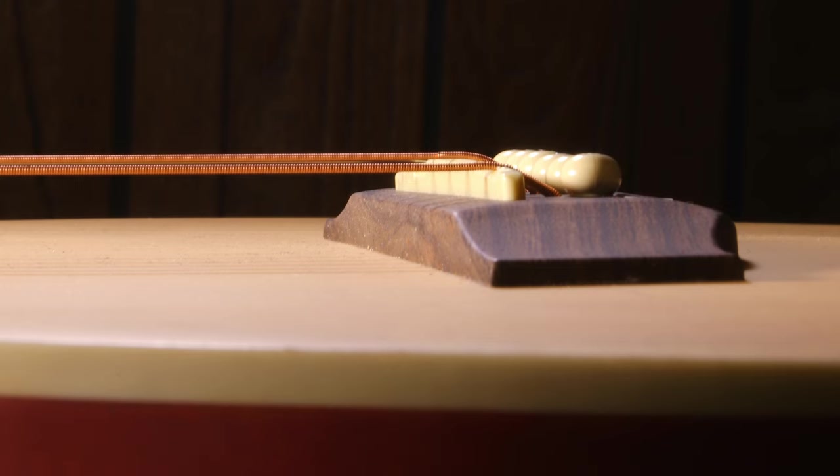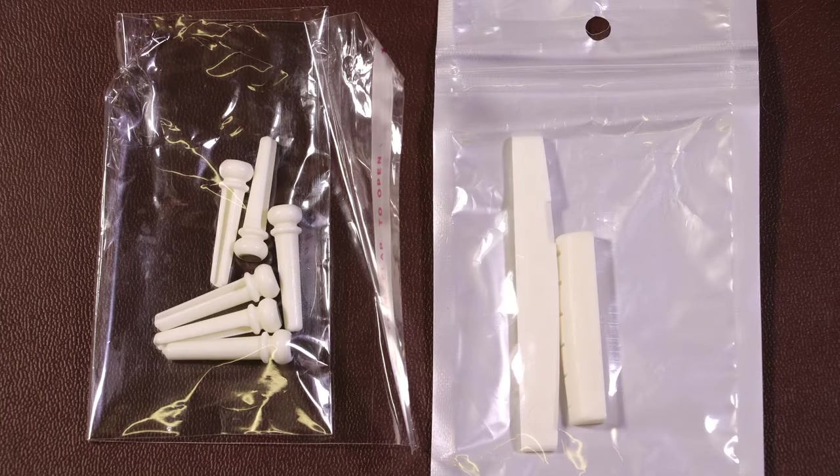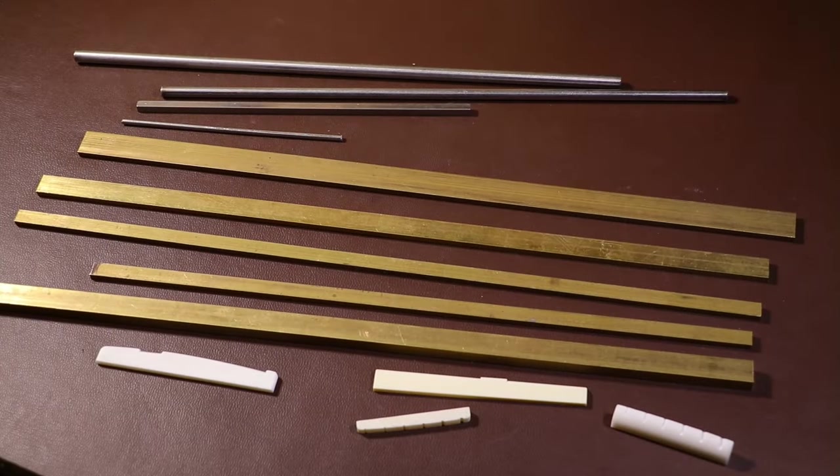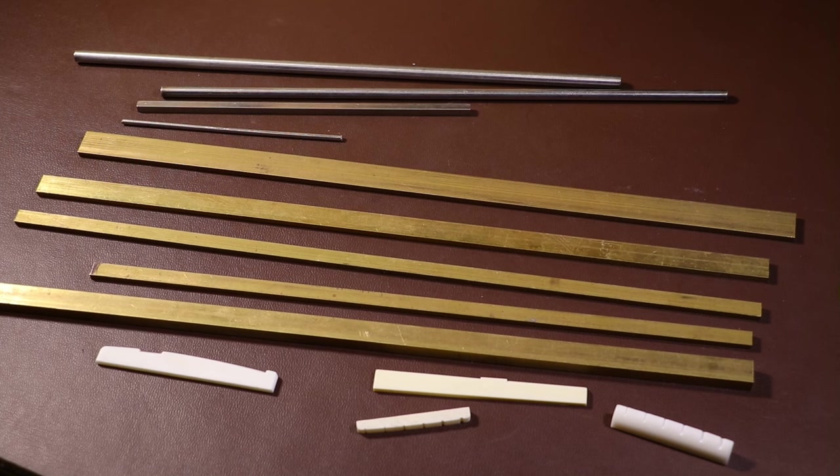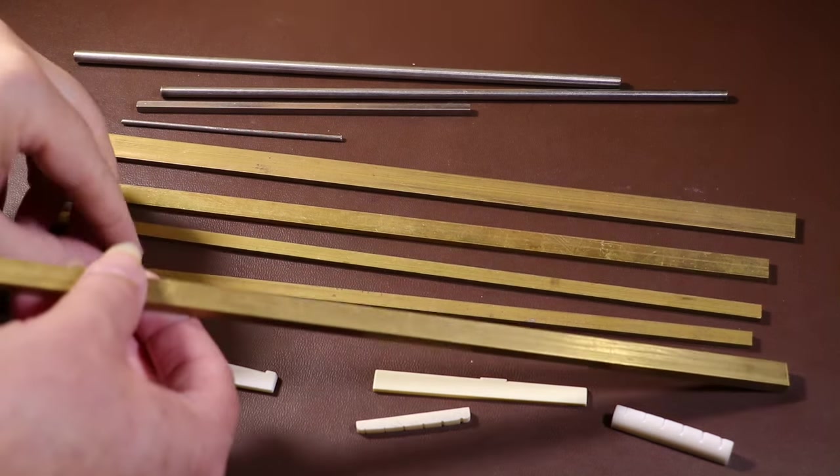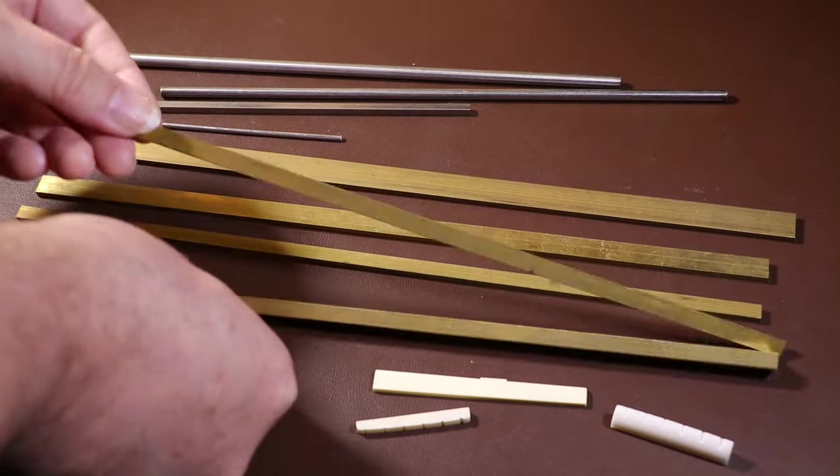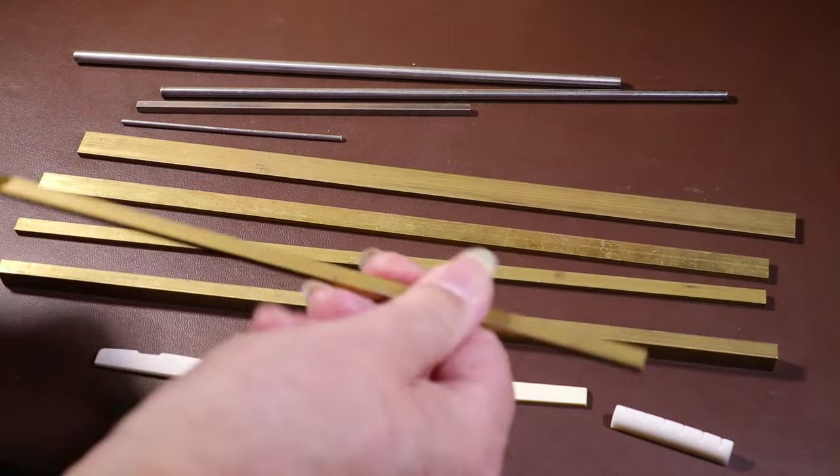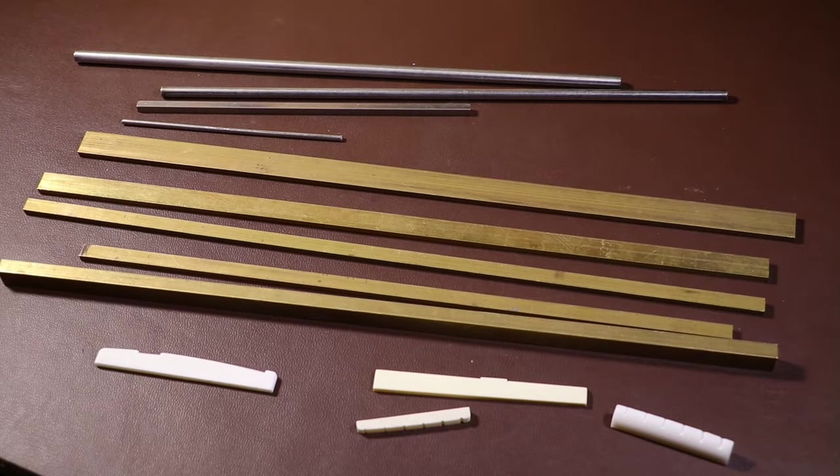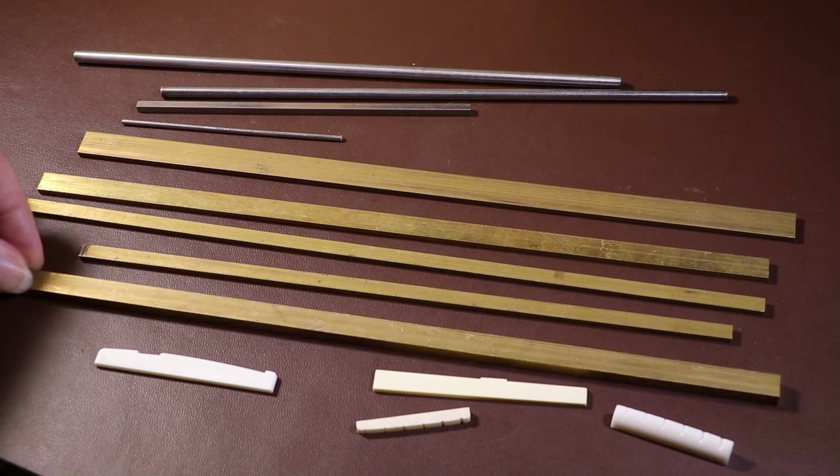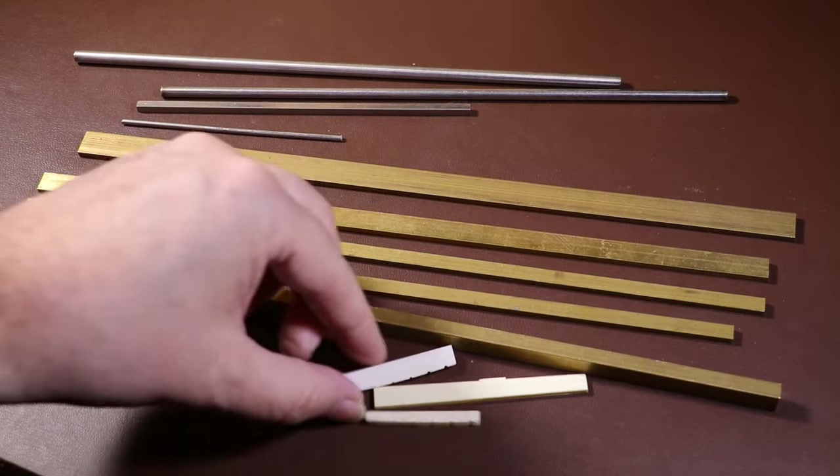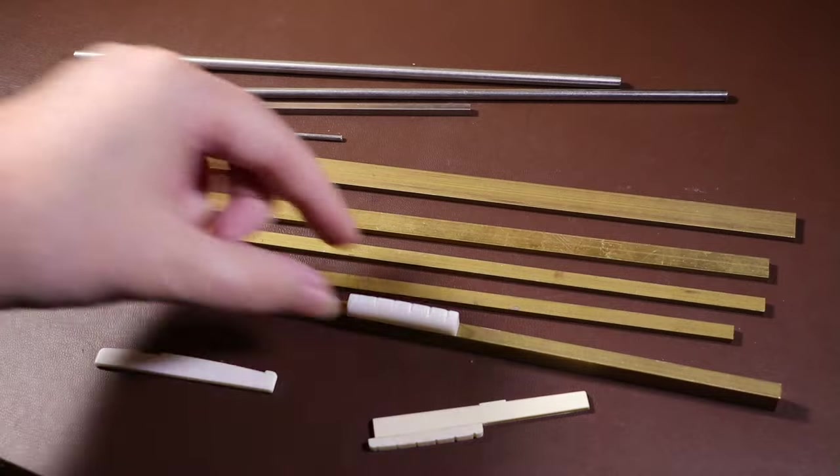The bone used to make bone saddles and nuts is usually described as bovine and that's because more commonly it's either made out of buffalo or cow. There are other choices of material if you don't like the idea of using bone. The one I use quite often is brass. And brass has all the benefits of bone in that it transfers the sound really efficiently. But it's also, for a metal, quite soft and easy to work with. So you can file it and cut it and shape it quite easily. And when buying the brass, you can buy it in the correct height and width as a blank nut or saddle. So most of the hard work is already done for you.